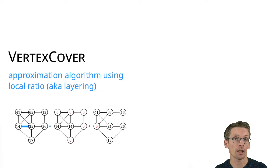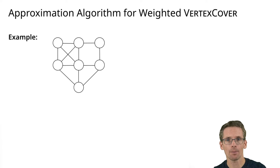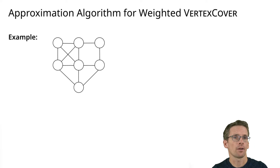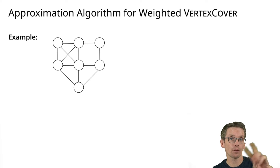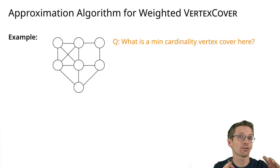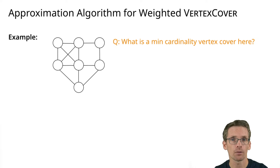Let's take a look at another approximation algorithm for vertex cover by local ratio or layering. We have a graph with vertices and edges. In a vertex cover, we want to pick a set of vertices such that for every edge at least one of the endpoints is selected. A min cardinality vertex cover is one where we do this with as few vertices as possible.